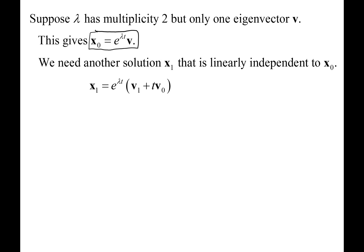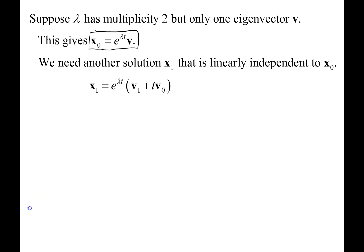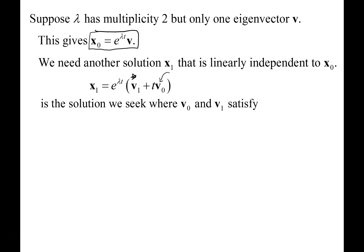x1 is built by the formula: e to the lambda t times the quantity v1 plus t times v0. The vector v0 here is an eigenvector — it may not be exactly equal to v, but it could be some multiple of v. What we're really searching for is v1, which needs to be linearly independent of v.